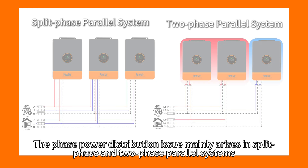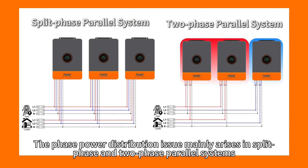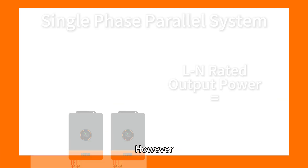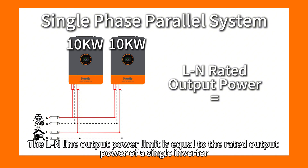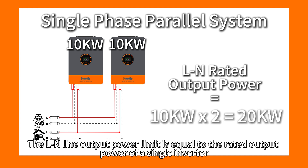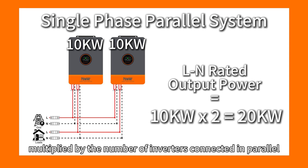The phase power distribution issue mainly arises in split-phase and two-phase power systems. However, we can understand the basic principle from the single-phase power system. The L-N line output power limit equals the rated output power of a single inverter multiplied by the number of inverters connected in parallel.